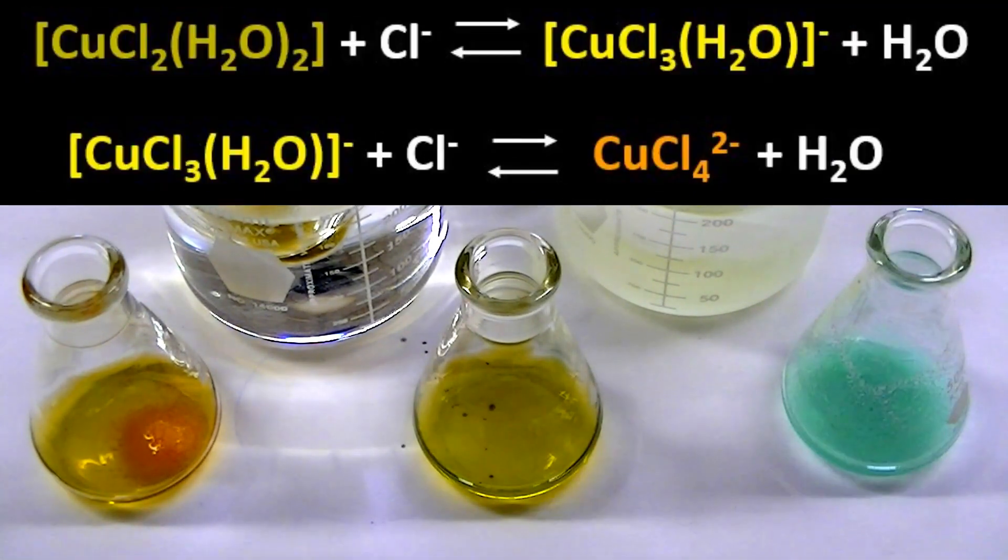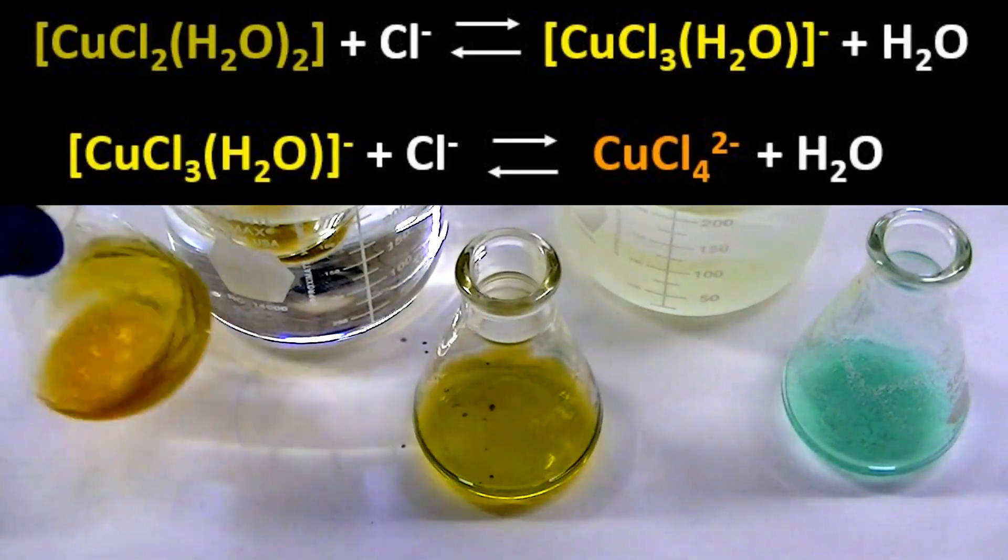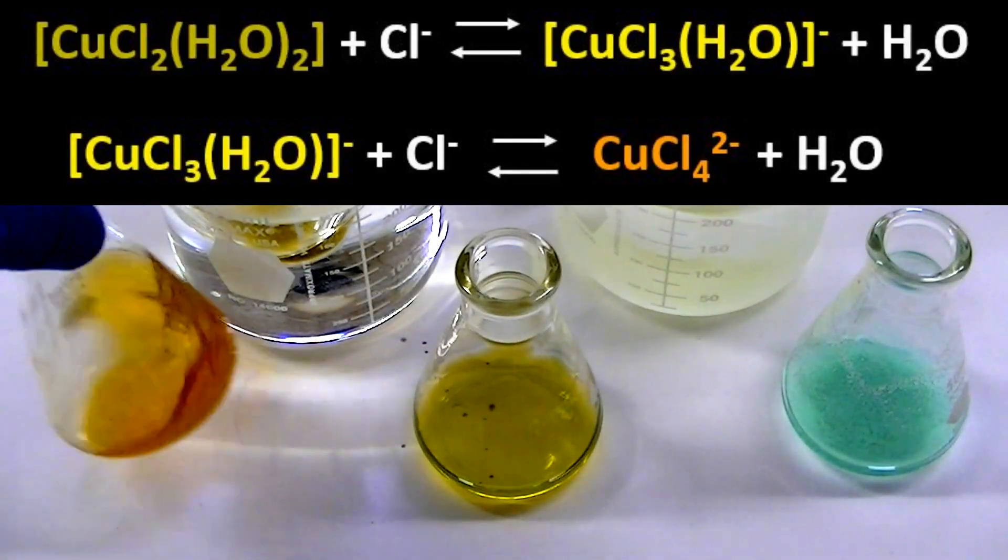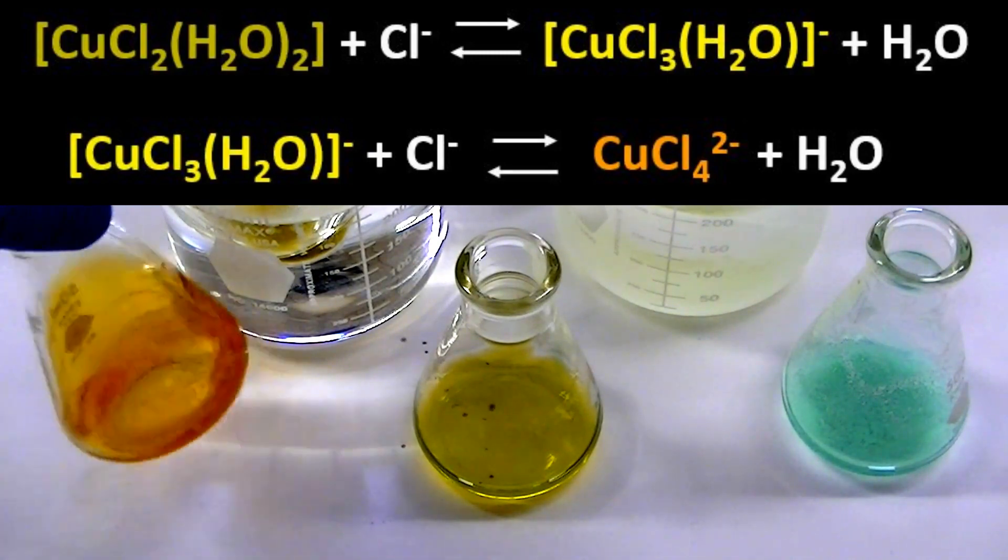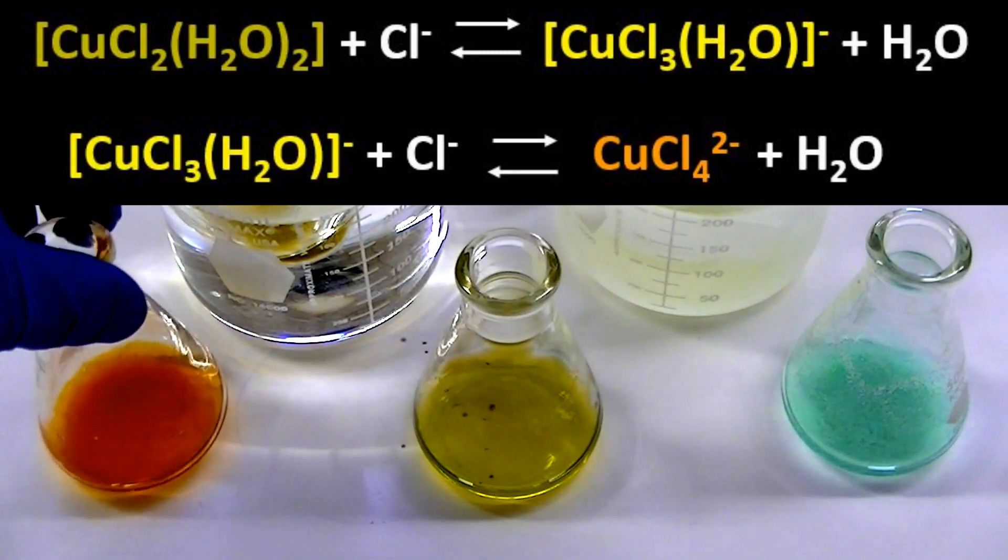The addition of salt to this flask increased chloride ion concentration. This shifts all equilibria displayed above to the right, favoring the formation of the orange tetrachloro-copper complex.